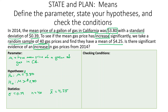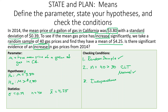Now we check our conditions. First, do we have a random sample? Sure enough it says random sample right there — check. Option two: sample size is 40, which is greater than 30, so by the Central Limit Theorem we get a normal sampling distribution. Condition three, independence: 10 × 40 = 400, and this must be less than all gas stations in California. There are definitely more than 400 gas stations in California, so all conditions are checked.